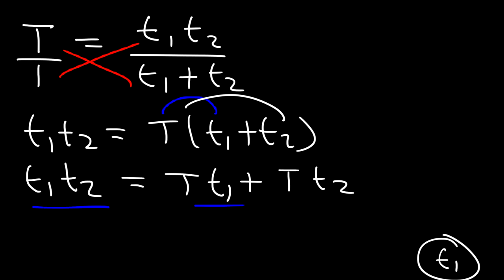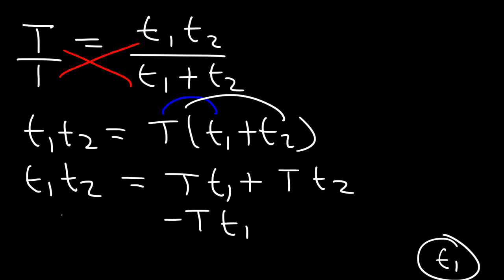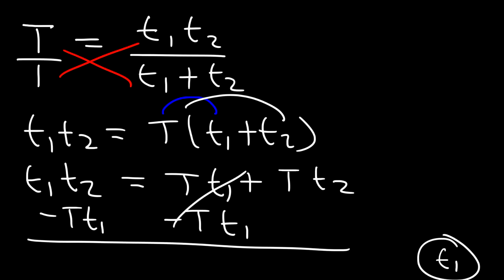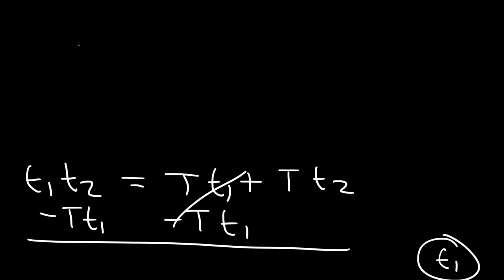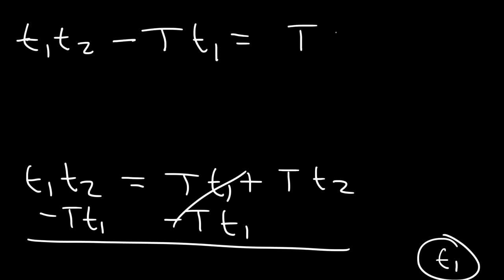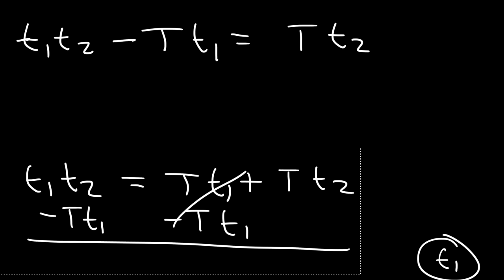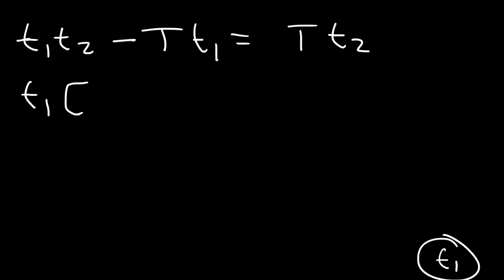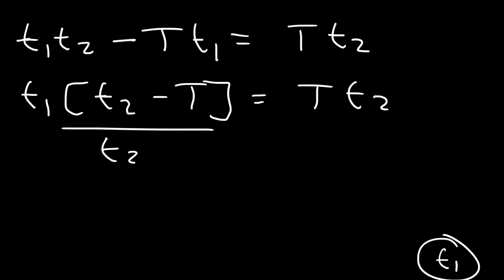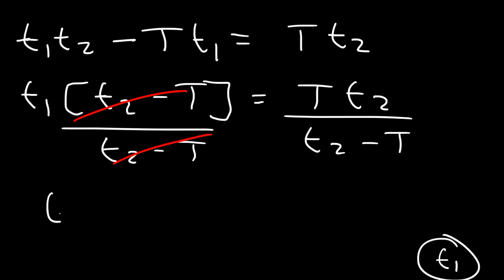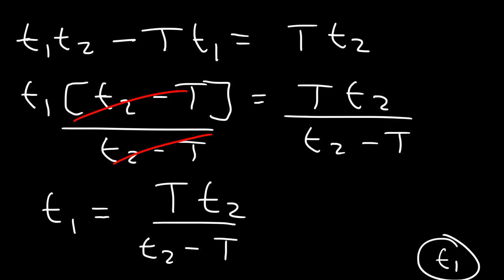Notice that t1 appears in two terms, so I move T·t1 to the other side by subtracting. So t1·t2 minus T·t1 equals T·t2. Now factor out t1: t1 times (t2 minus T) equals T·t2. Divide both sides by (t2 minus T), so t1 equals T·t2 divided by (t2 minus T). And that's how you solve for t1.